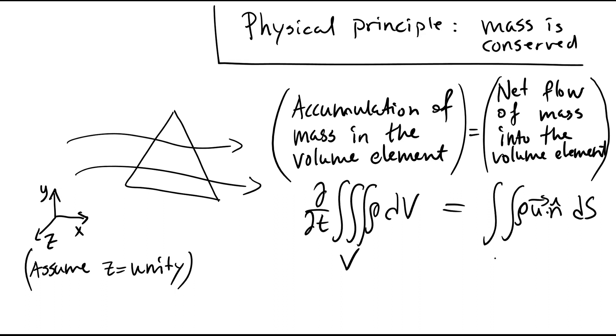This equals the surface integral of the density times the velocity vector times the normal vector of the surface. We put a negative sign here to indicate that this is the net flow of mass into the volume element. This expression is the integral form of the continuity equation in conservation form.